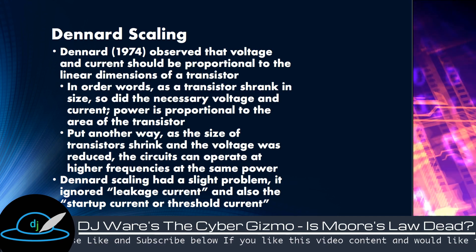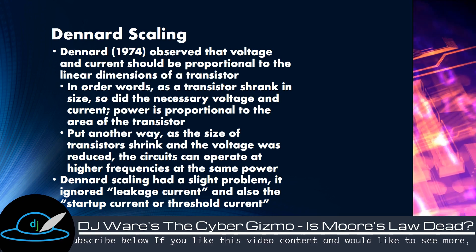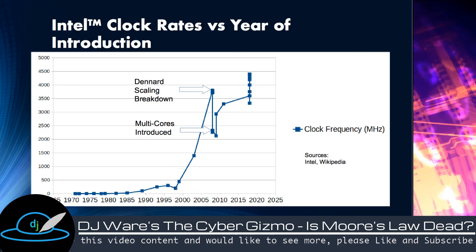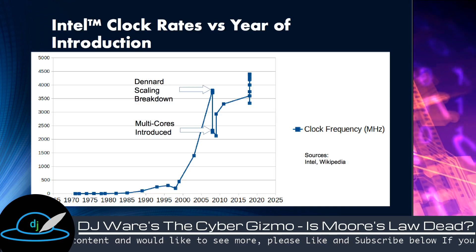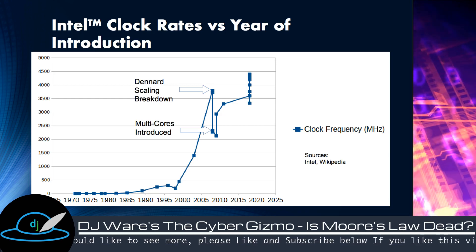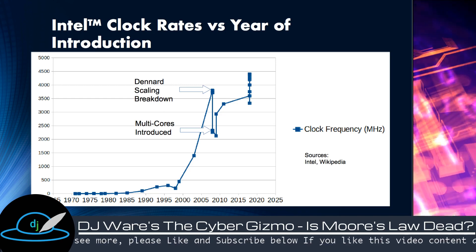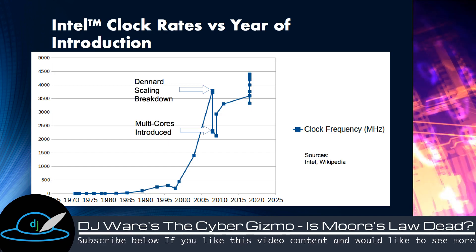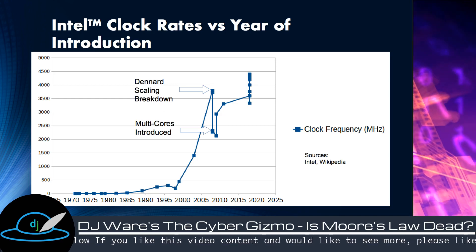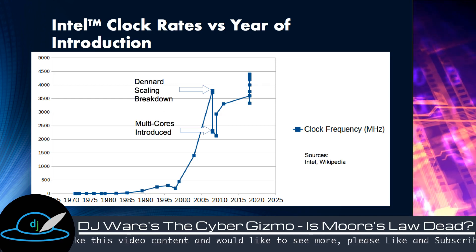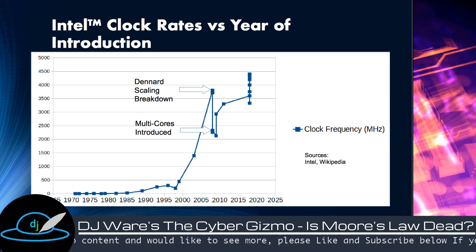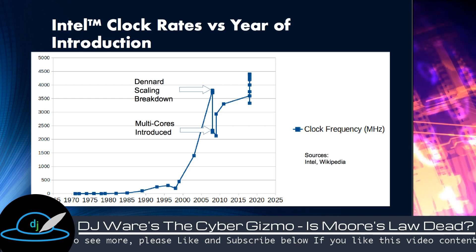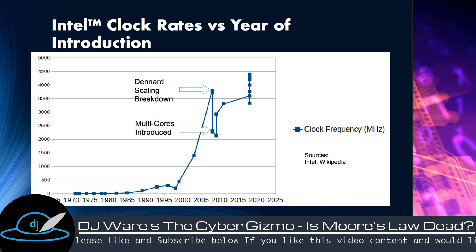That's great, but there was one problem. Dennard forgot to include leakage current and startup current in his calculations. So when we got to 2003, we ended up not being able to cross that boundary with a single CPU core. We couldn't get past — I believe it was Project Teos at Intel — going from 4 GHz on the Pentium 4 to 5 or maybe 6 GHz. The thermal limits and power requirements went off the scale, and they weren't able to produce a chip that was economically or commercially viable, so they canceled it.